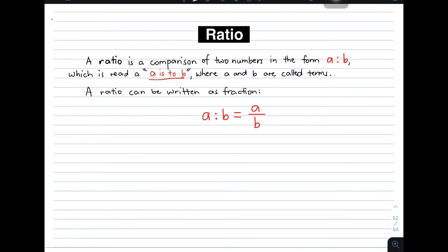A ratio can be written as a fraction. This is the general formation or general form of a ratio. We have here A is to B, and then it is also equal to A over B, meaning we can represent a ratio as a fraction. They are just the same.